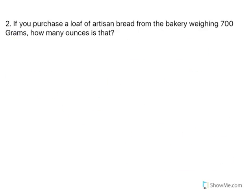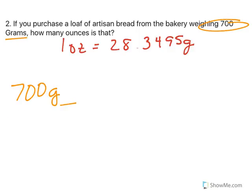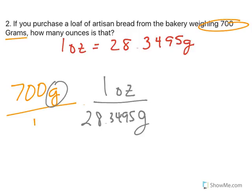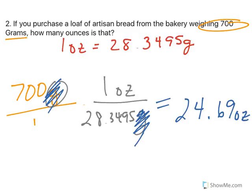Number two, if you purchase a loaf of artisan bread from the bakery weighing 700 grams, how many ounces is that? Well, if you look at your conversion sheet, you will see that 1 ounce is 28.3495 grams. Well, what do we start with? We're starting with 700 grams. So, in my conversion piece, I have 700 grams, and if I want to get rid of grams, it's got to go in the opposite spot. So, the 28.3495 is going to go in the denominator. The 1 ounce will go in the top. So, grams on the top cancels out with grams on the bottom. We're going to divide, 700 divided by that, and I end up with 24.69 ounces.